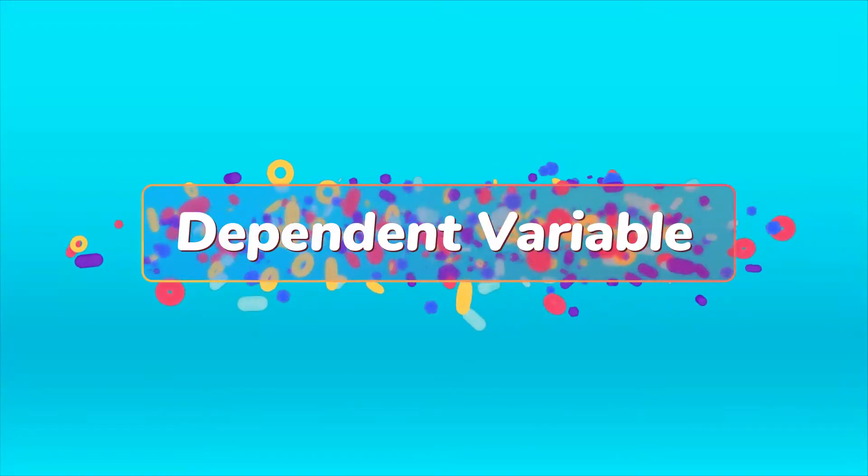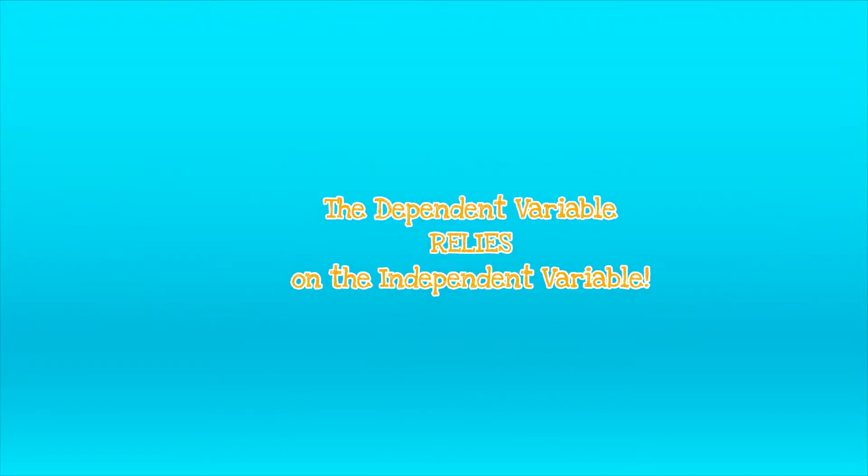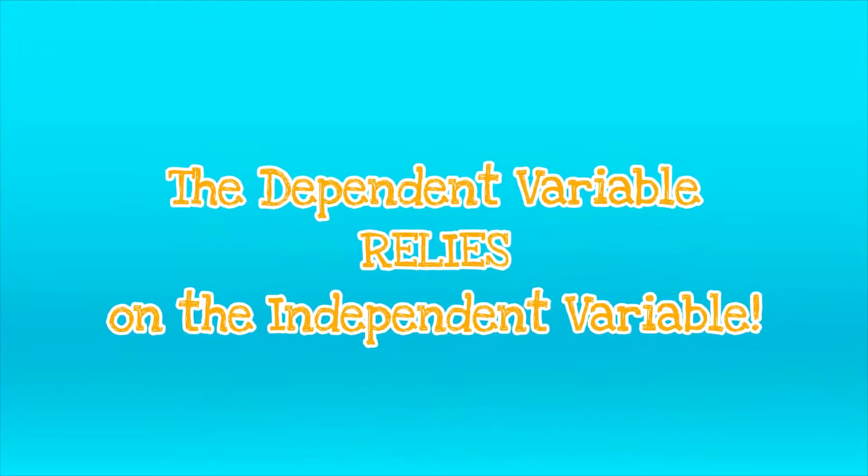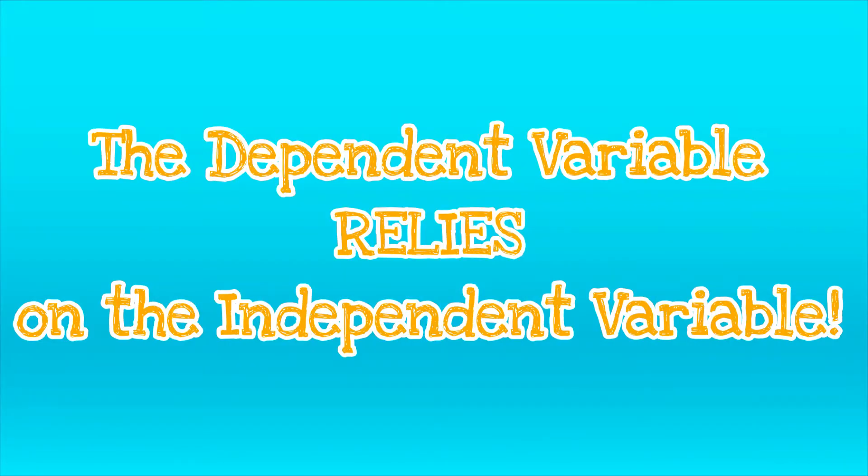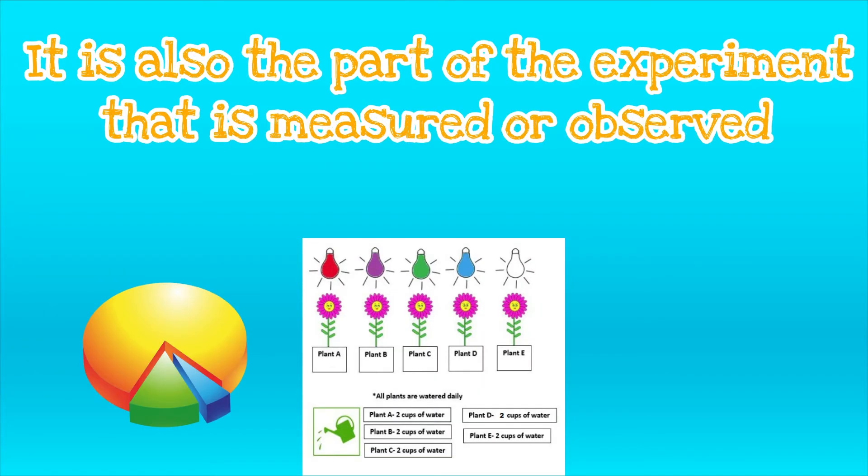Now we're going to discuss the dependent variable. The word dependent means that you rely on something. So the dependent variable will depend on the independent variable. It's also the part of the experiment that is measured or observed.